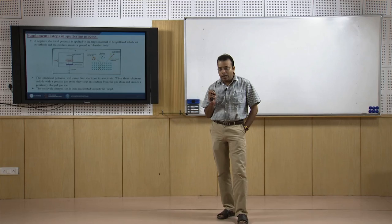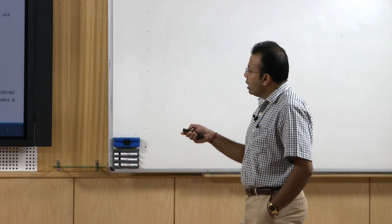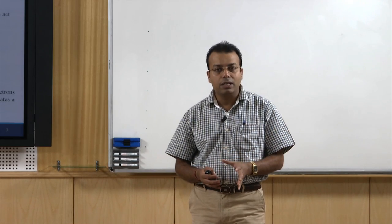First we need to know the fundamental things working behind sputtering techniques. A negative electrical potential is applied to the target material to be sputtered, which acts as cathode, and the positive anode or ground is the chamber body. The anode is the substrate and the cathode is the target, which is grounded. We create an electric field inside, which generates incident argon ions that hit the target material, creating a plasma that then hits the substrate itself.